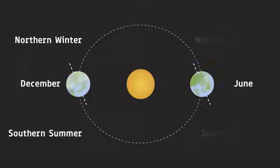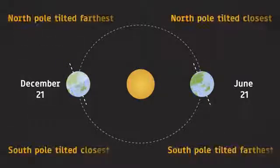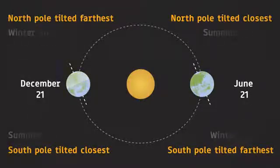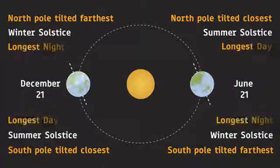These extremes, when the poles are either farthest or closest to the Sun, are called solstices, when we have the longest days or nights.